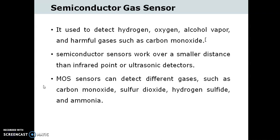Because the sensor must come in contact with the gas to detect it, the semiconductor sensor works over a smaller distance than the infrared point or ultrasonic detectors. The MOS sensor can detect different gases such as carbon monoxide, sulfur dioxide, hydrogen sulfide, and ammonia.